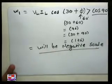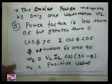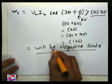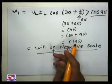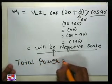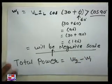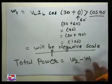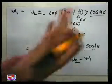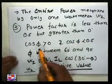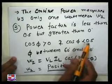So in the third case comparing W2 and W1: W2 gives a positive value, while W1 gives a negative value. So the total power is equal to W2 minus W1. Because W2 is positive and W1 is negative. In the case where power factor is less than 0.5 but greater than 0, this is very important for solving examples and drawing the phasor diagram.